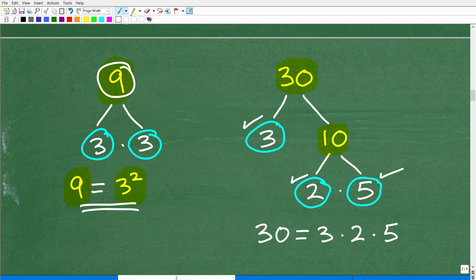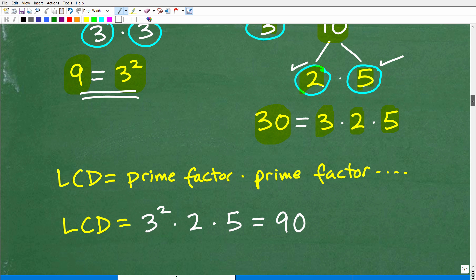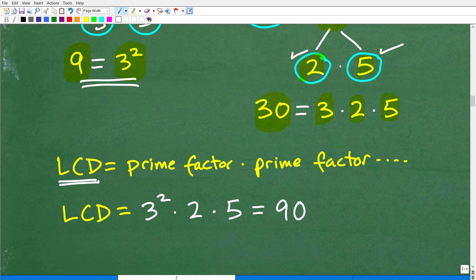So 30 is equal to 3 times 2 times 5. Once you've done that work, getting the LCD is pretty easy. Here is the formula to find the lowest common denominator. We need to represent all the prime factors between these two numbers. We're looking at 9's prime factor, which is 3 squared, and 30's prime factors. We need to write each prime factor, and we're going to multiply all the prime factors that we found between the two numbers.